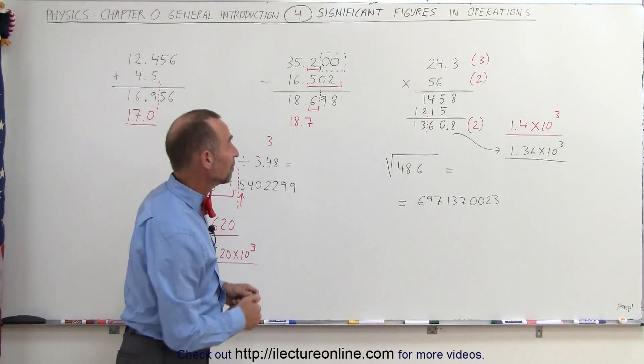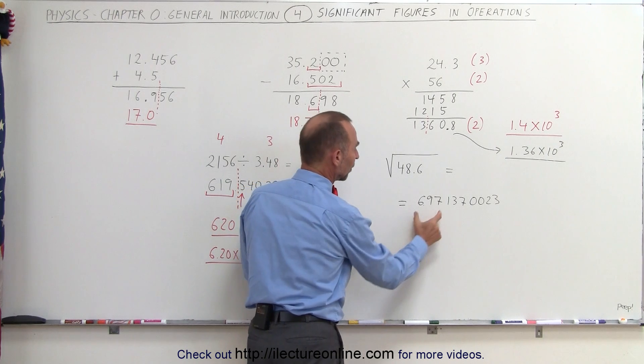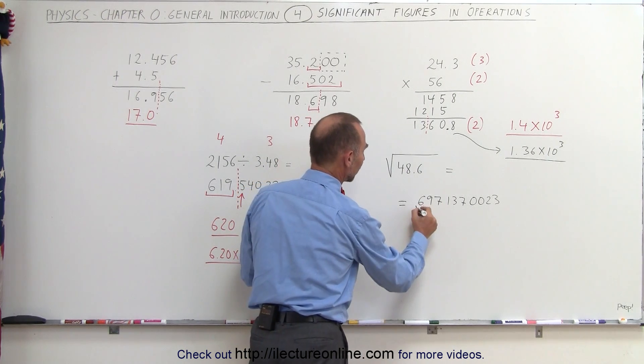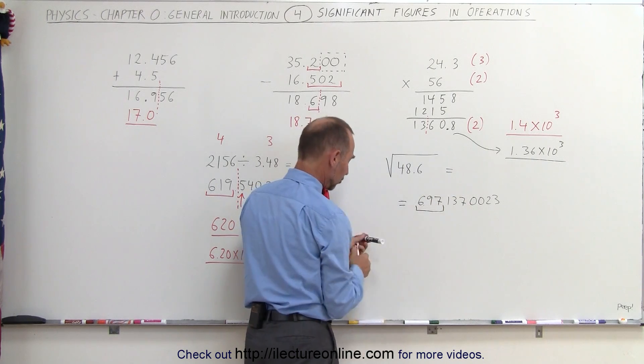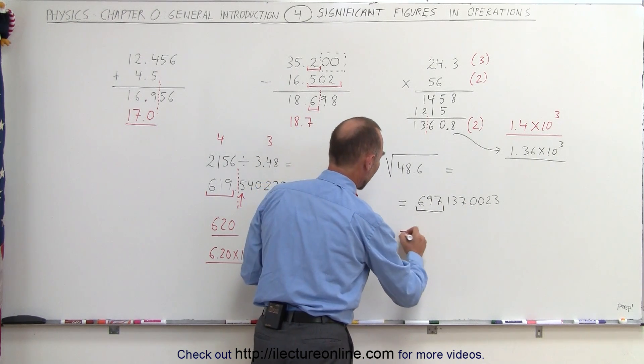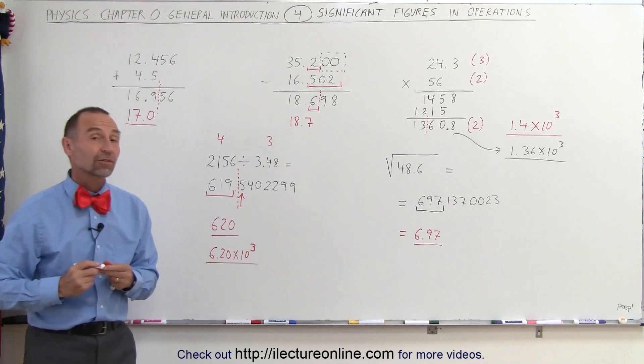Now you notice there's three significant figures there, which means you should only have three significant figures there. These are the only significant numbers. Since this is a 1 here, you can go ahead and drop that, and the answer should be written as 6.97 to be correct in terms of significant figures.